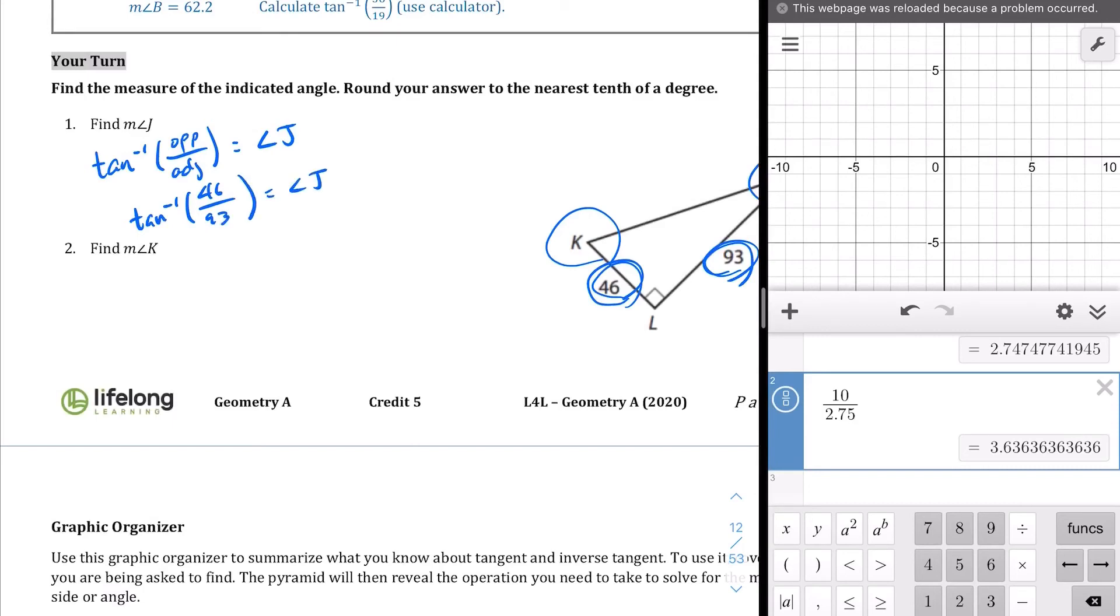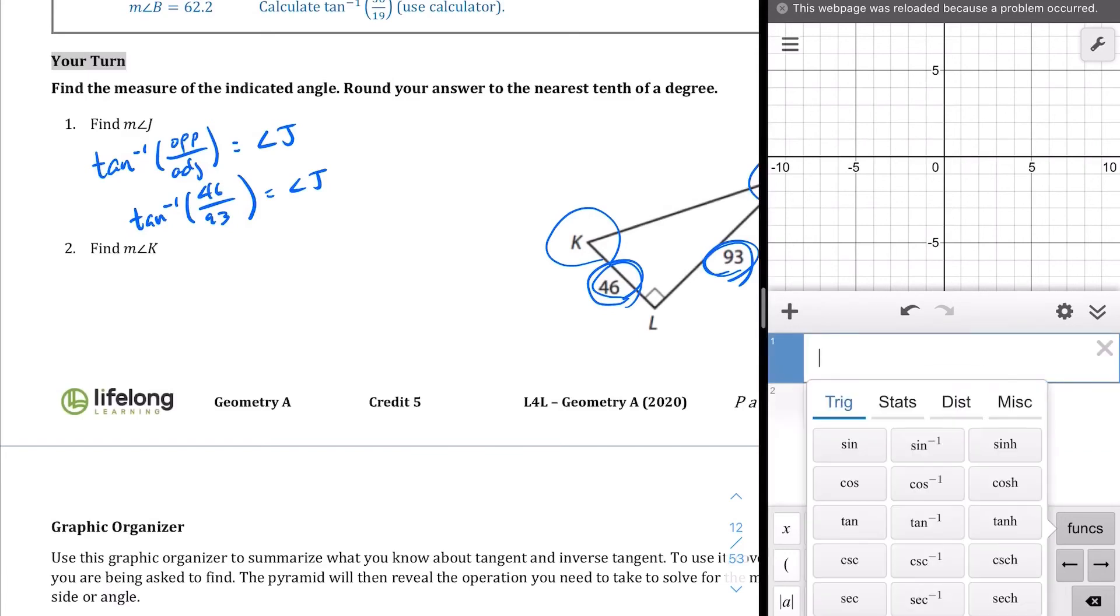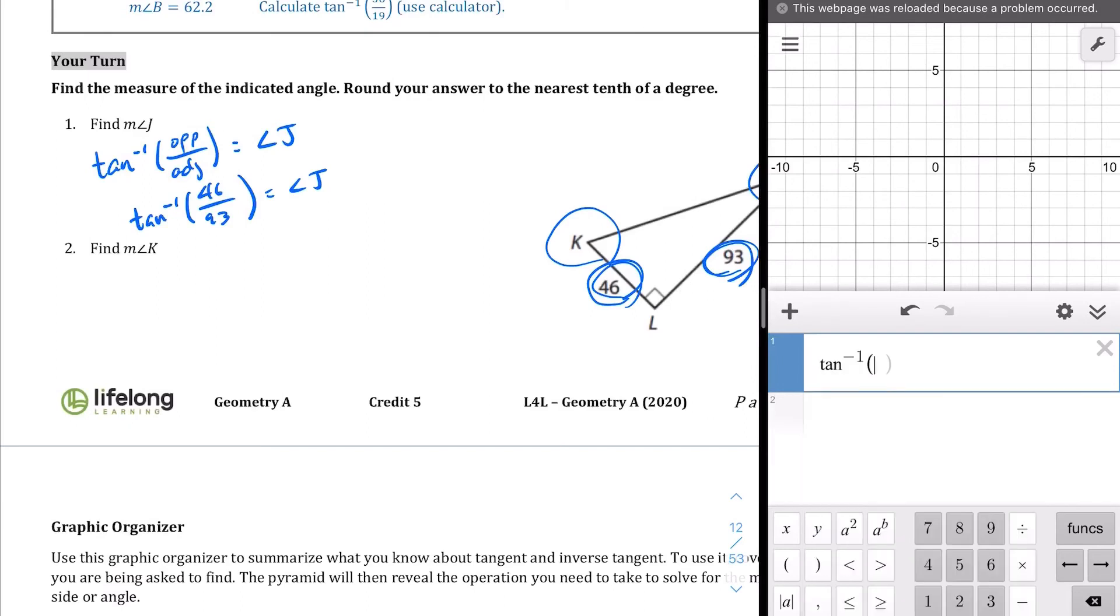The nice thing about using Desmos is you can actually just punch that directly in there. In the function tab, you should find the inverse tangent right there. We're going to type in 46 divided by 93, directly into there. We get 26.3. So angle J is approximately 26.3 degrees. That's what we end up with.